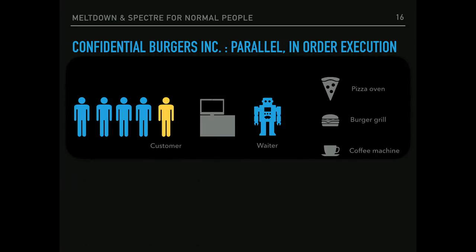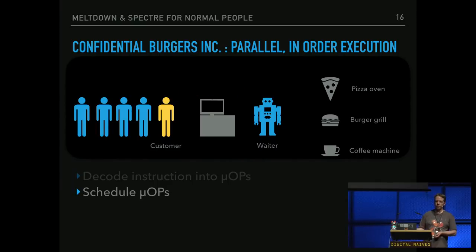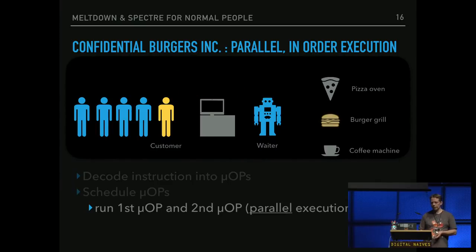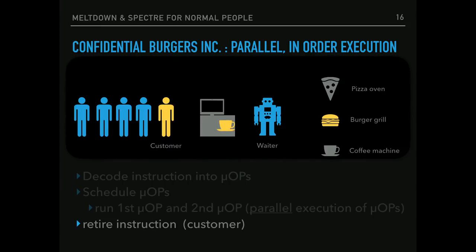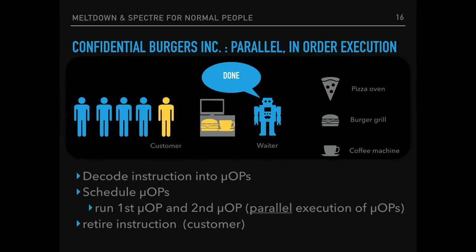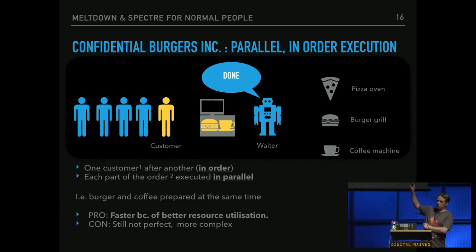The next idea: you get the order, you schedule your micro-operations, but this time you do them in parallel — the burger and the coffee. Then you retire the instruction or give the customer his order. This is way, way better because it's twice as fast as the other version — you have better resource utilization.